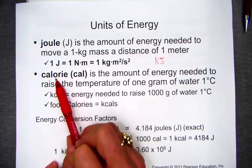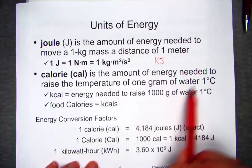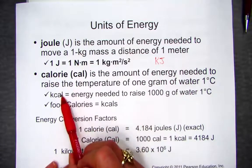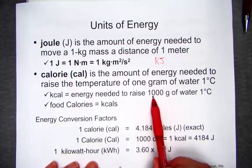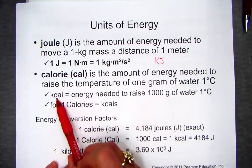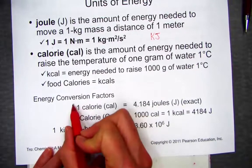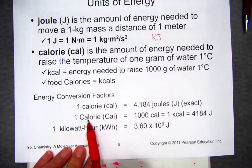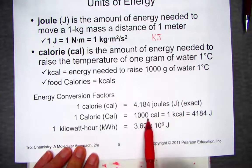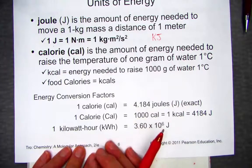Here in America, we often talk about calories of heat energy, especially in foods. A calorie is the amount of energy needed to raise the temperature of one gram of water by one degree Celsius. A kilocalorie, commonly referred to with a capital C, is also defined as a thousand grams of water, which is one kilogram — so a kilocalorie raises a thousand grams of water by one degree Celsius. One calorie is 4.184 joules. One Calorie (capital C) is a thousand small calories, or 4,184 joules.